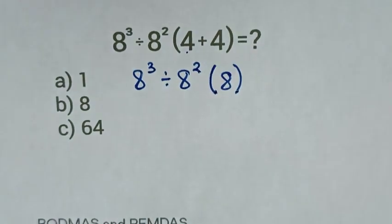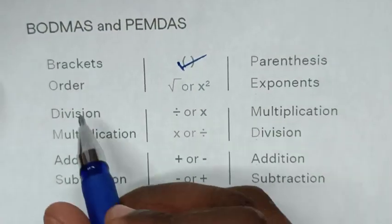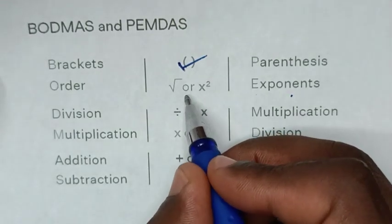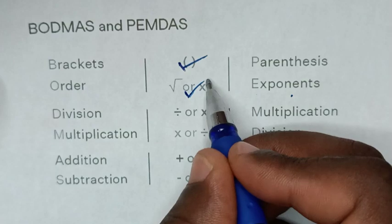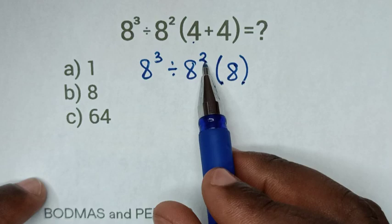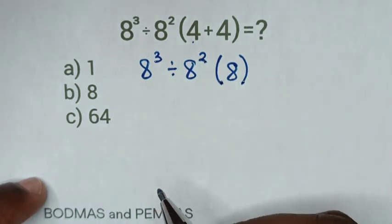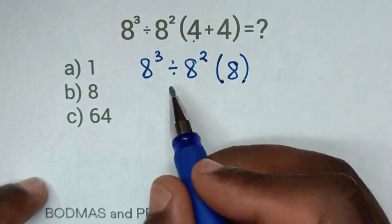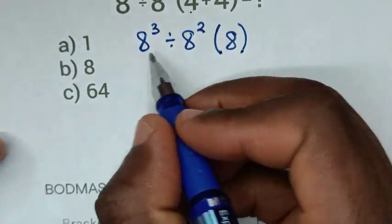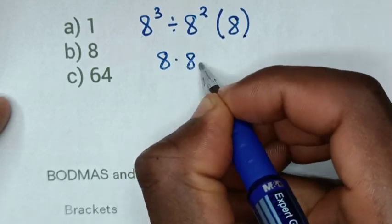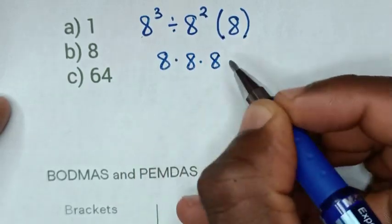In the next step, we deal with order or exponents, whereas we have order or exponent of 8 power 3 and 8 power 2. Now from 8 power 3 divided by 8 power 2, 8 power 3 is same as 8 times 8 times 8, then divide.